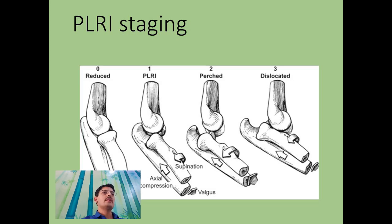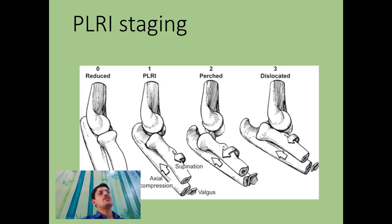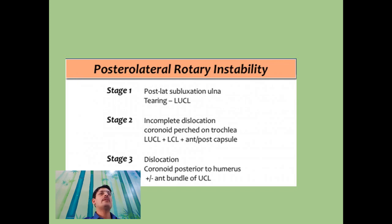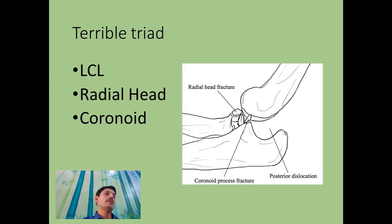There are stages of lateral instability. Stage one is posterior lateral subluxation of the ulna with tearing of the LUCL, which is a reduced but unstable state. Stage two is incomplete dislocation with the coronoid abutting the trochlea, with the LUCL, LCL, and anterior/posterior capsule torn. Stage three involves tearing of the anterior bundle of the ulnar collateral ligament, resulting in complete dislocation with the coronoid going posterior to the humerus — a true dislocation.